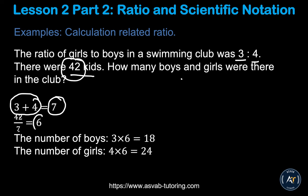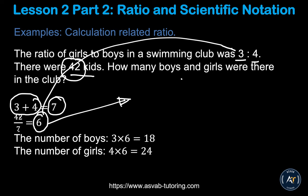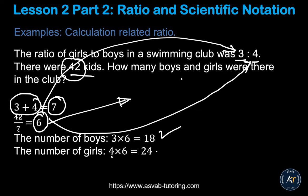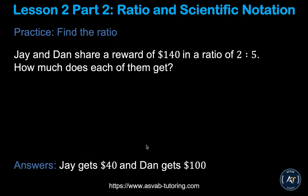Now divide the total number by that sum: 42 divided by 7 equals 6. This 6 is the multiplication factor — similar to how we divided top and bottom by the same number in the earlier examples. Multiply this factor by each ratio value to find the individual numbers: 3 times 6 is 18 girls, and 4 times 6 is 24 boys.